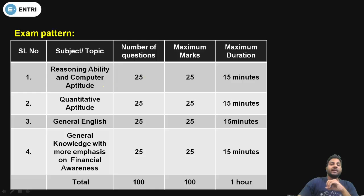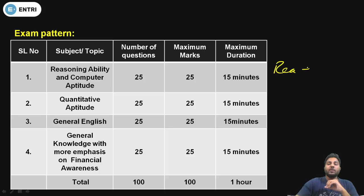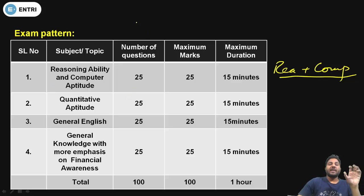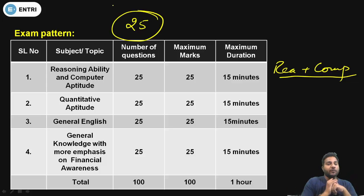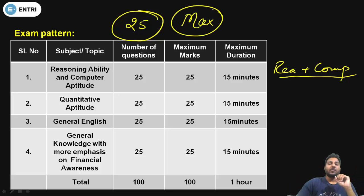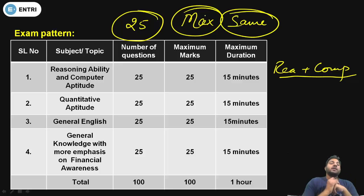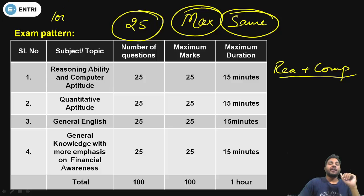Look at this exam pattern: Reasoning, Quant, General English, and GK. One more thing — with Reasoning you will also be getting a Computer segment. All the segments have the same number of questions, which is 25, and the same maximum marks. The duration of each segment will also be the same for individual segments.